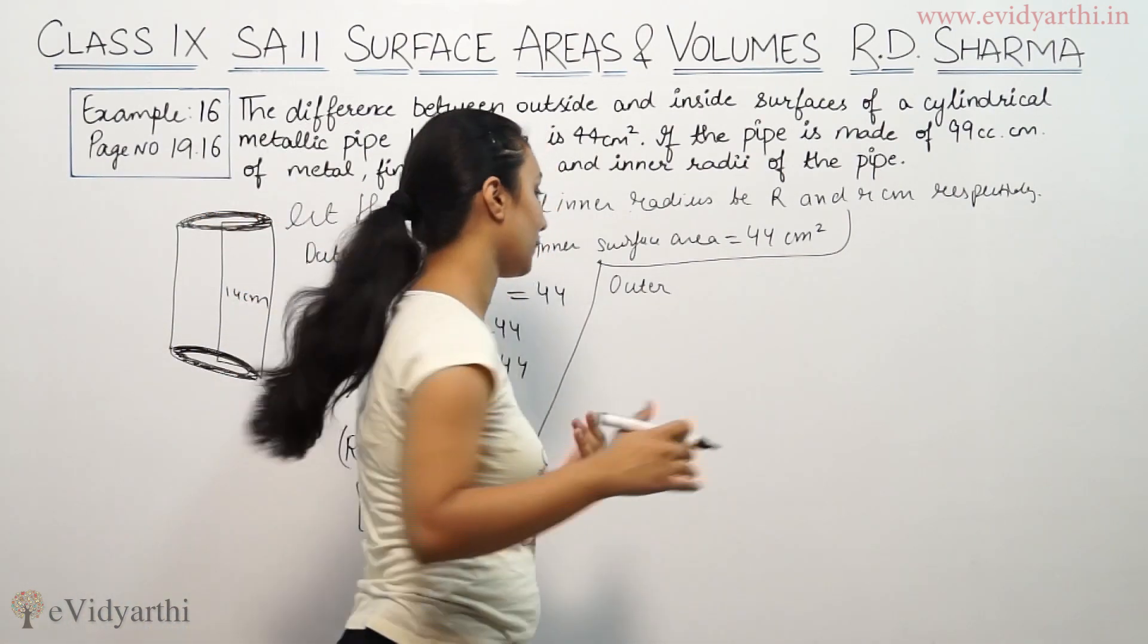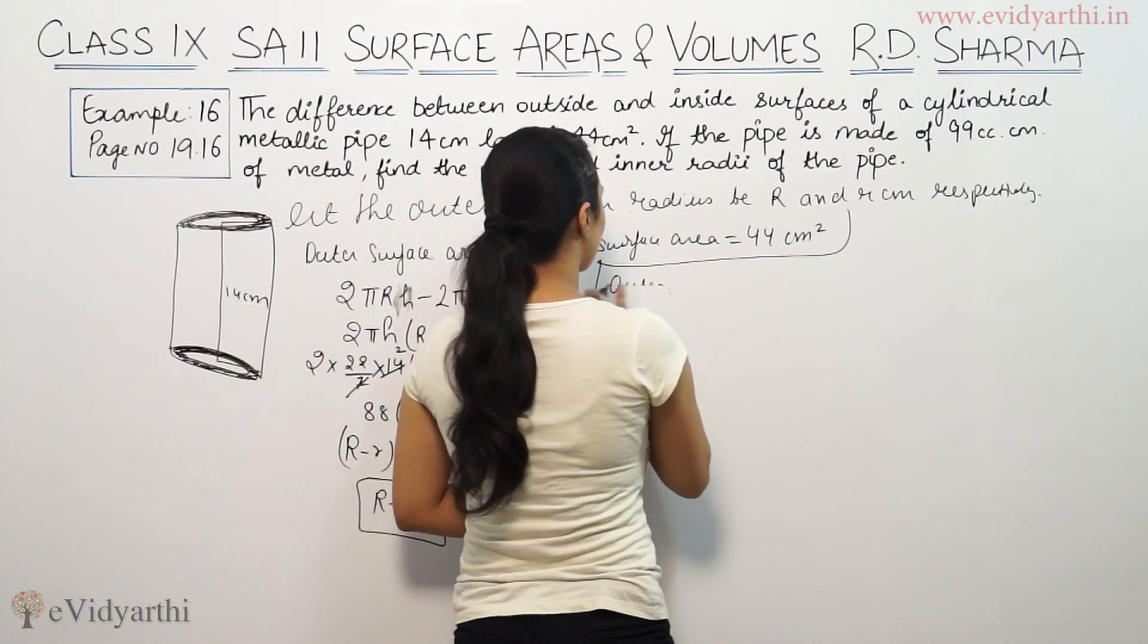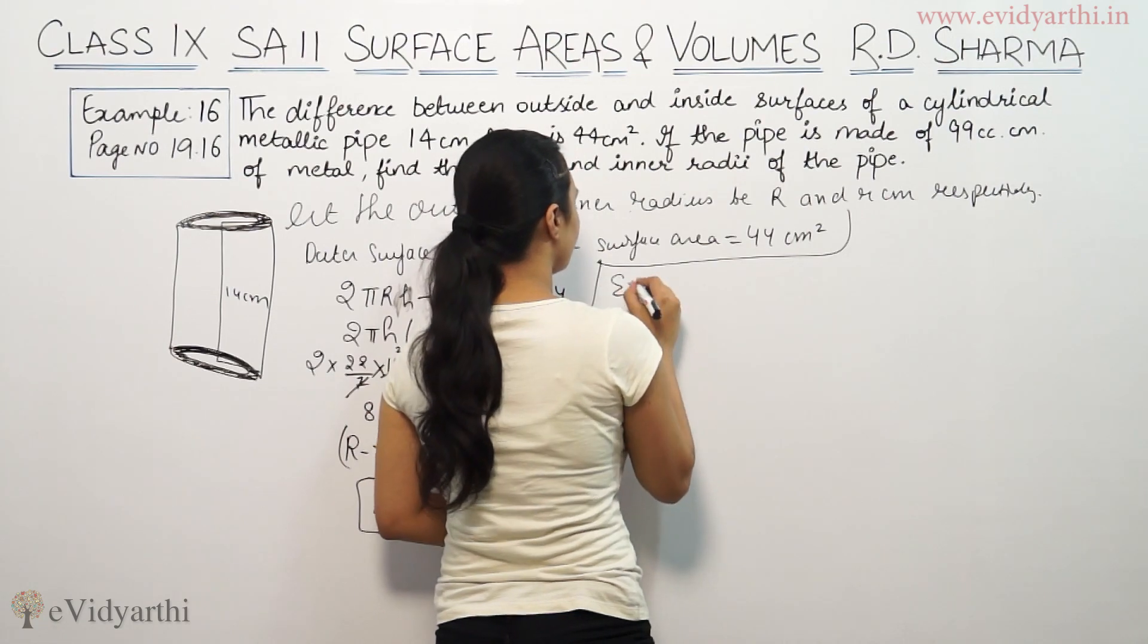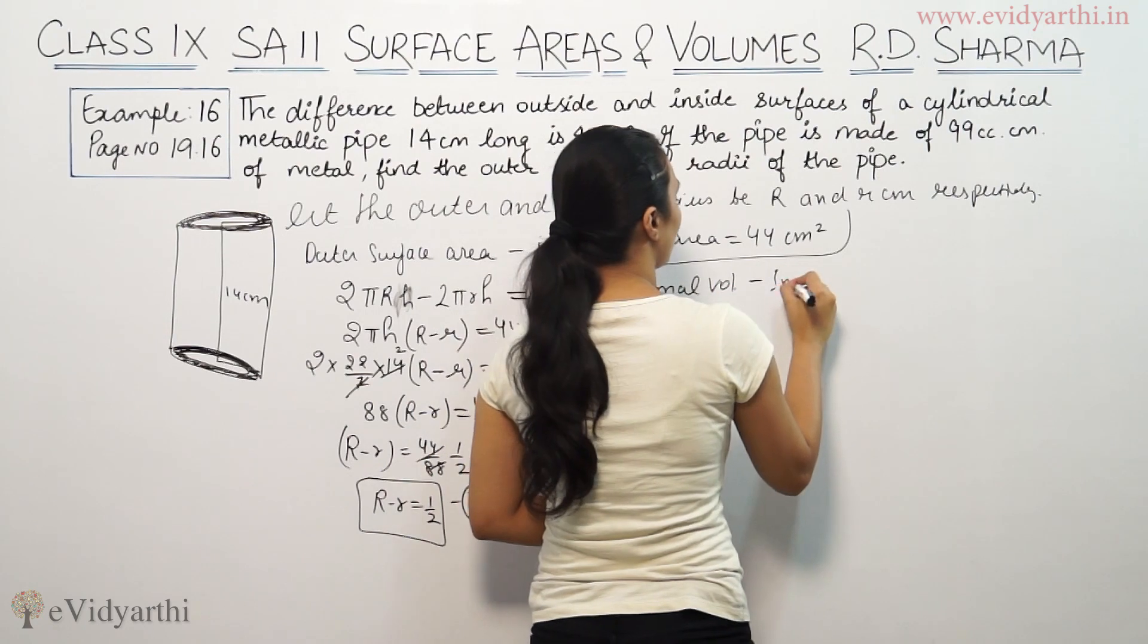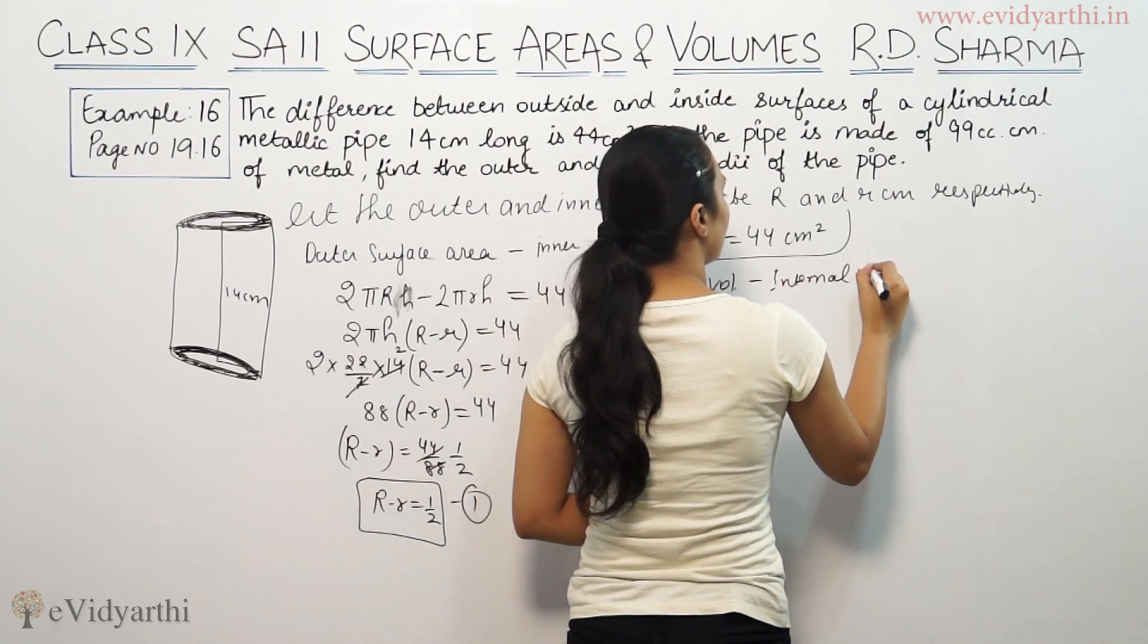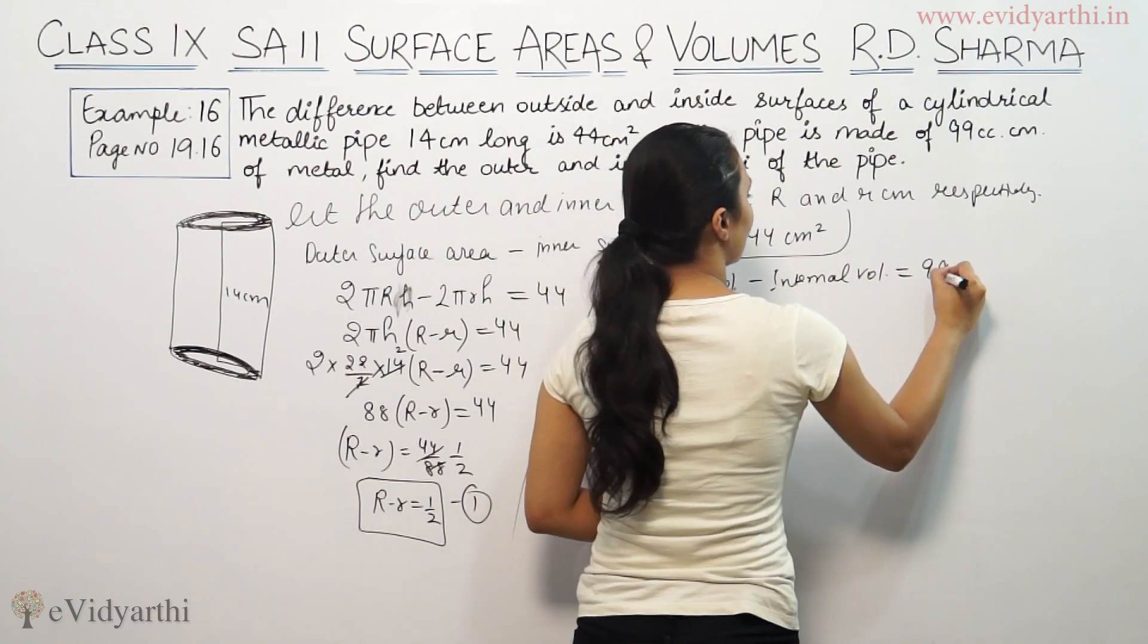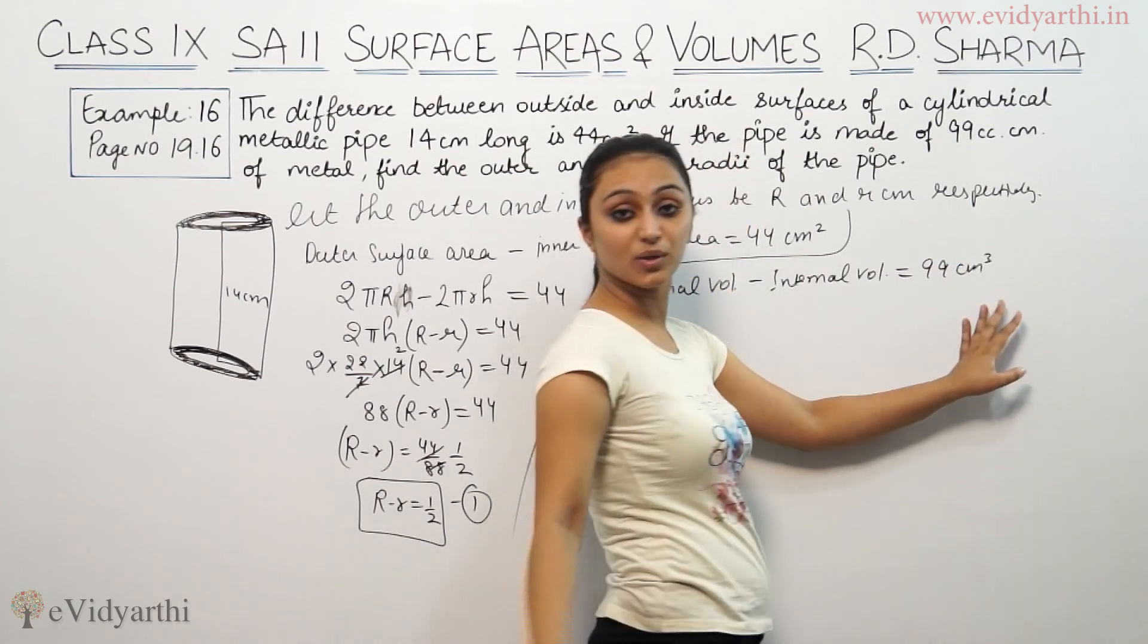So again, this much volume is used. So outside volume minus inside volume gives the actual volume used. So external volume minus internal volume equals 99 cm³.